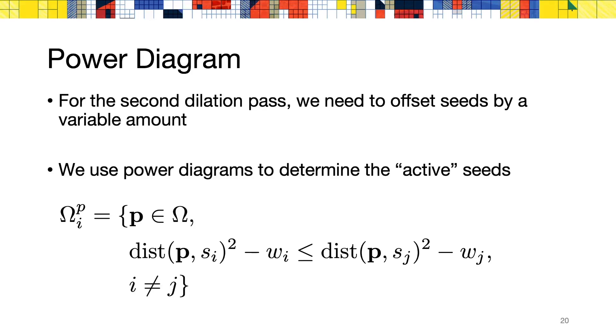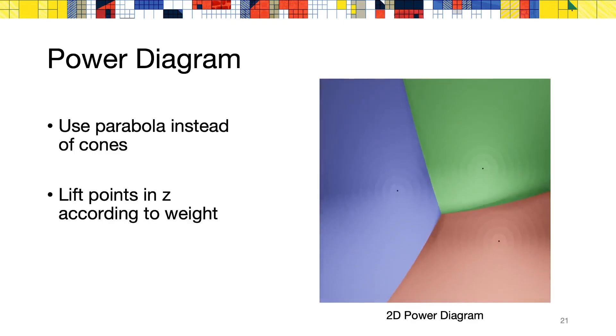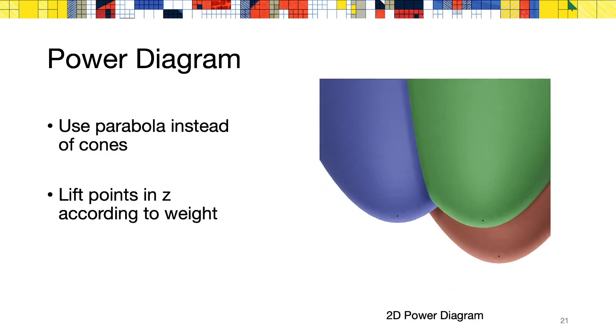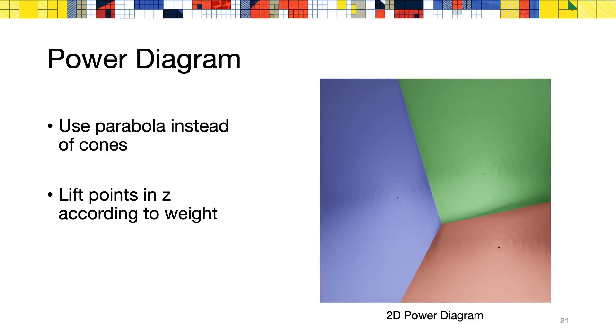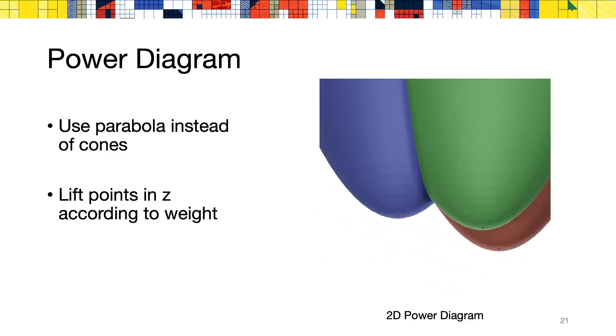A power diagram will partition the space into cells, based on the square distance to each seed, plus an additional weight that is different for every seed. If we remember our previous analogy with the cone and the Voronoi diagram, the equivalent for a power diagram would be to use a parabola centered at every seed, and lift them according to the weights associated to every seed.